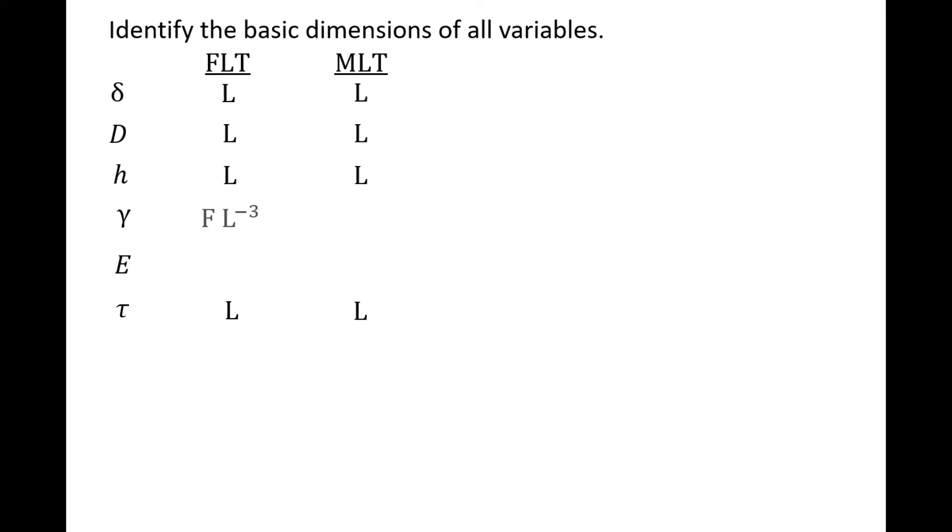Specific weight gamma has dimensions of force per length cubed in the FLT system. Recalling that force has dimensions of mass times length per time squared, that means gamma has dimensions of mass times length to the negative 2 times time to the negative 2 in the MLT system.